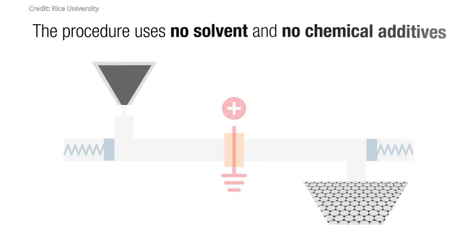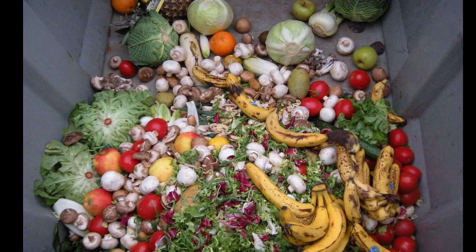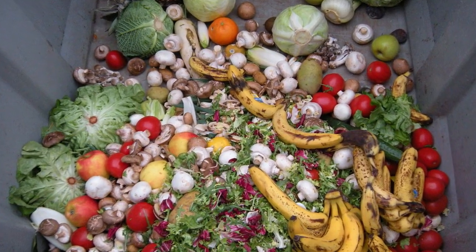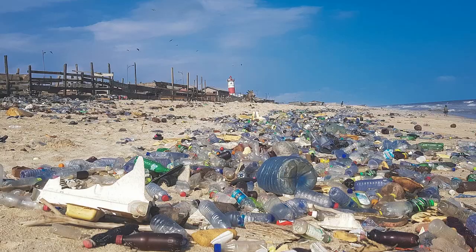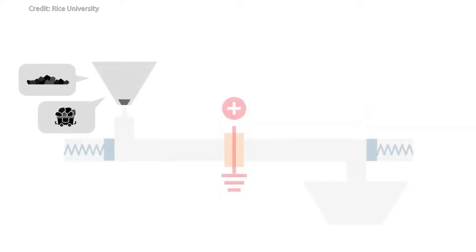This is a big deal. The world throws out 30% to 40% of all food because it goes bad, and plastic waste is a worldwide concern. Any solid carbon-based matter, including mixed plastic waste and rubber tires, can be turned into graphene using this new process.